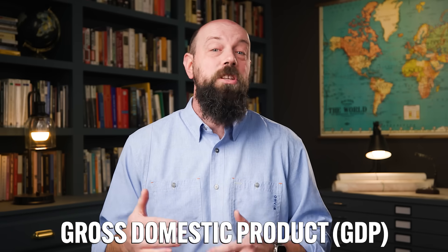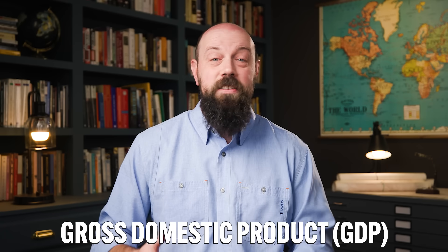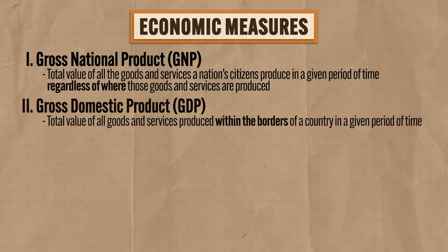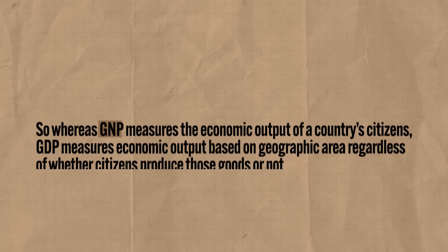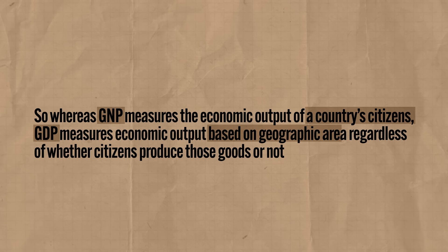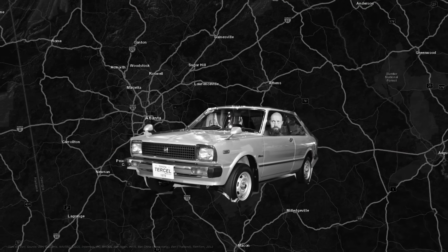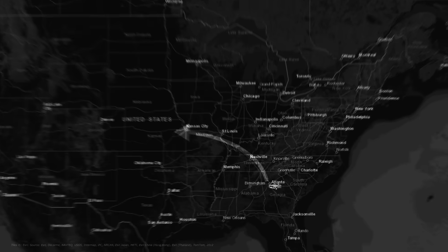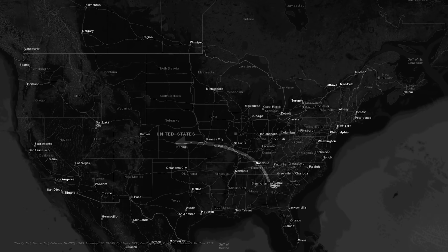Second, let's talk about gross domestic product, or GDP, and this is close to GNP but with one crucial difference. GDP measures the total value of goods and services produced within the borders of a country in a given period of time. So whereas GNP measures the economic output of a country's citizens, GDP measures economic output based on geographic area regardless of whether those citizens produced those goods. So when you buy a Toyota manufactured and sold in the United States, that money is counted in the U.S. GDP, not Japan.